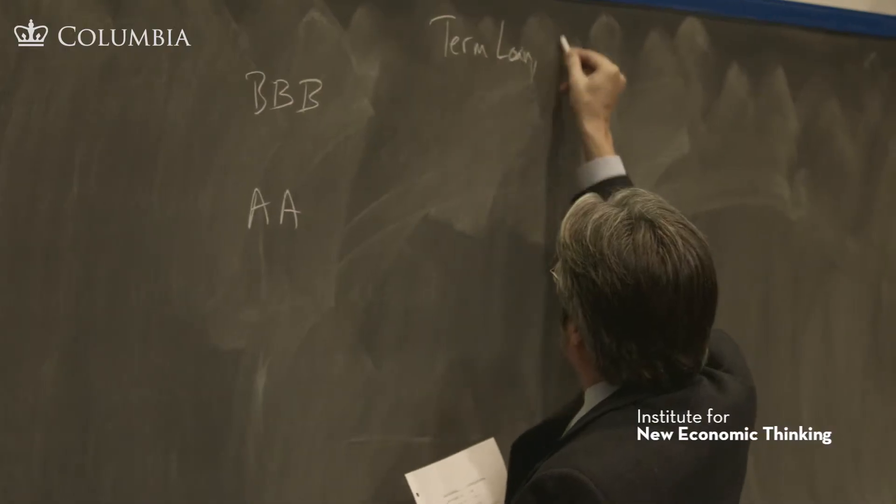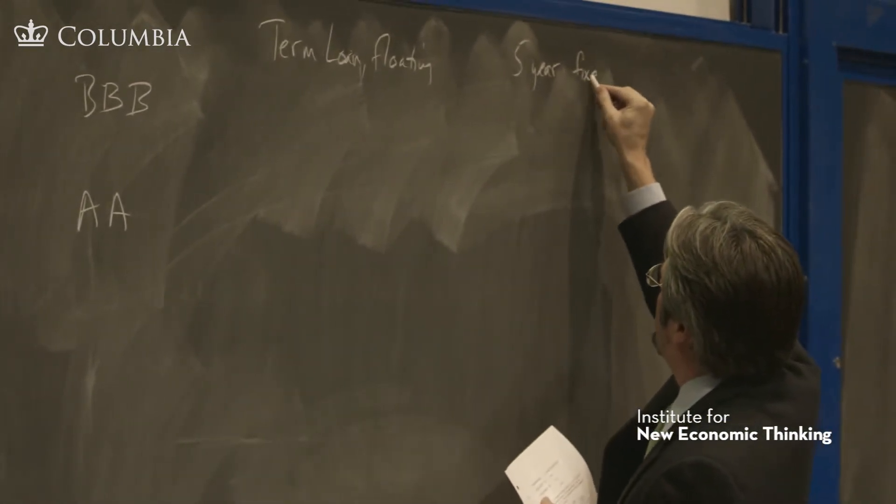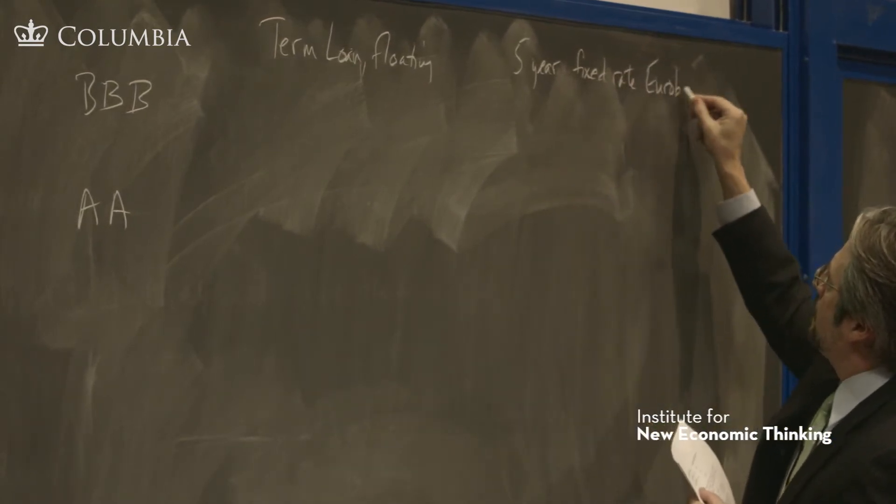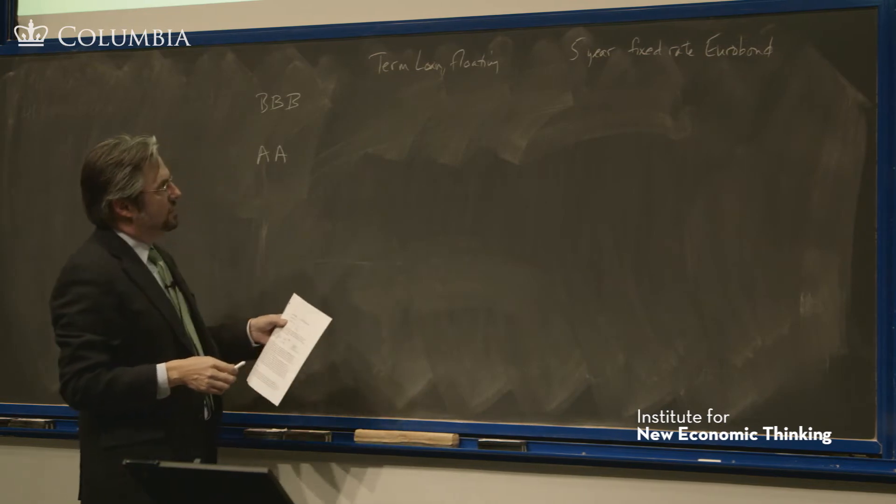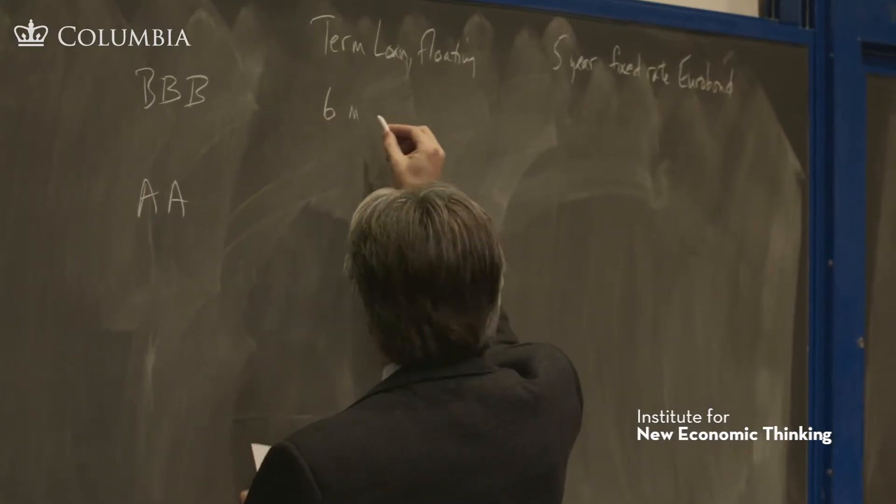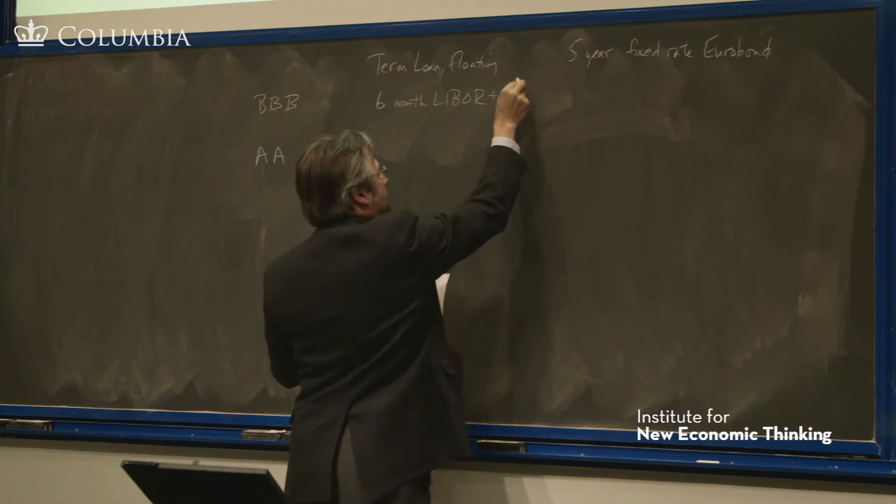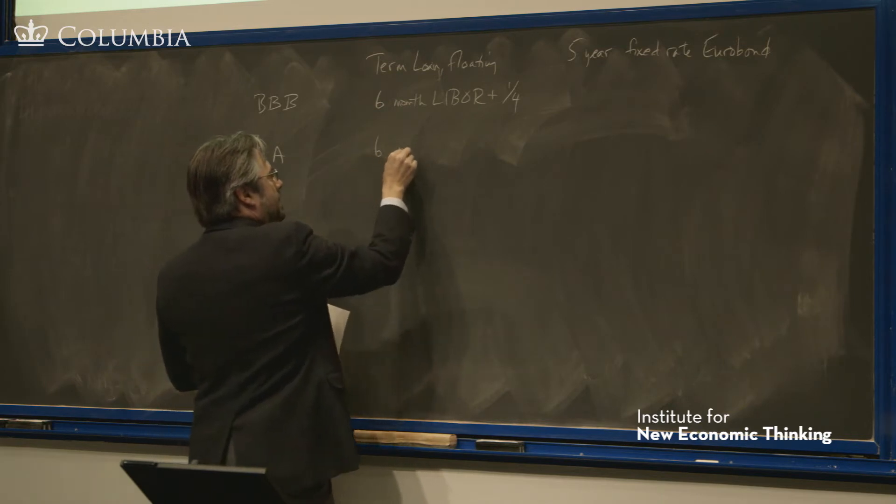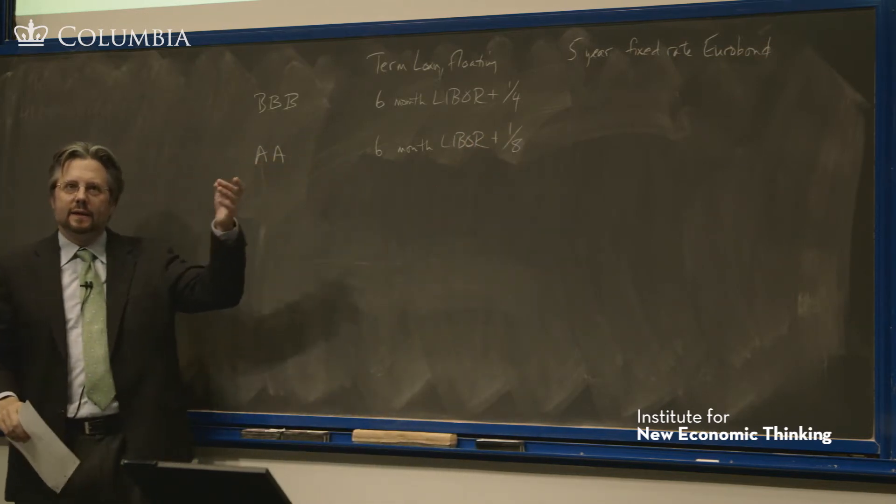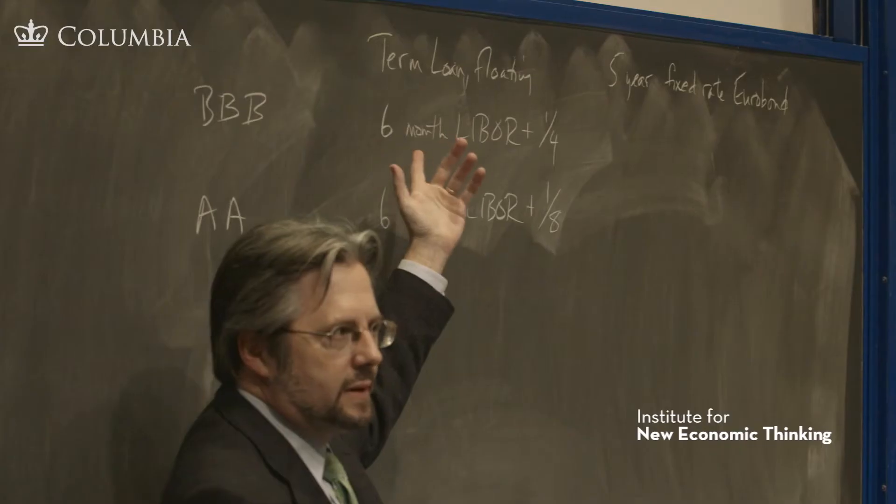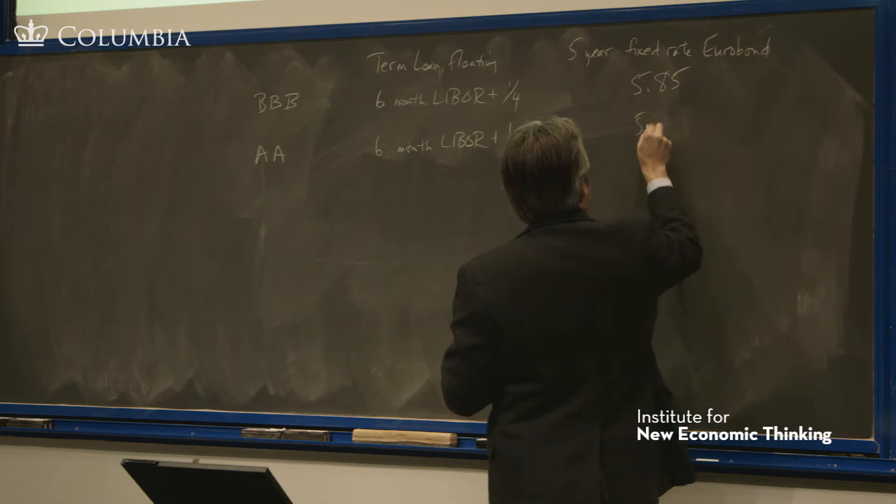Term loan with a floating rate and a five-year fixed rate euro bond. They receive these quotes: six-month LIBOR plus one-quarter, and six-month LIBOR plus one-eighth. Double A gets a lower rate quote than Triple B here in the short term, based on the credit rating.